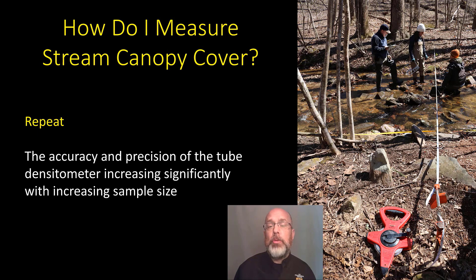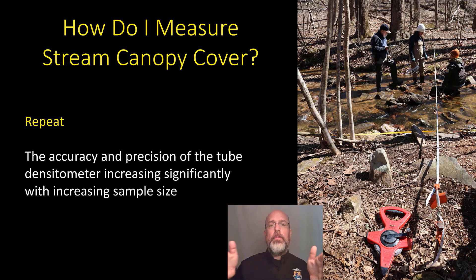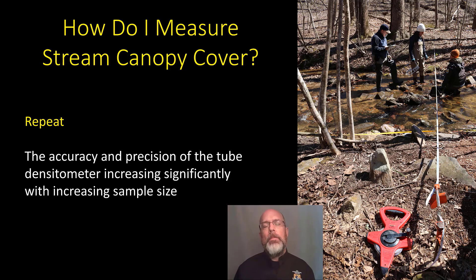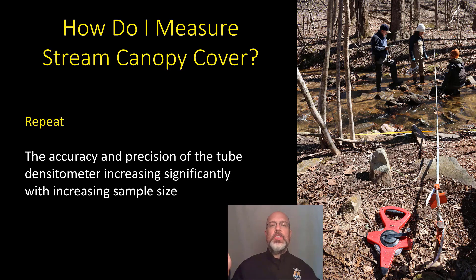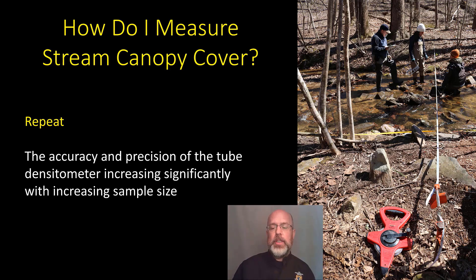The last step is to repeat this process — two wetted widths apart for your transects. Repeat all the steps. It's important to know that the accuracy and precision of the tube densiometer increases significantly with increasing sample size. So the more samples you can take along that stream reach, the better for the accuracy of this method.